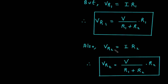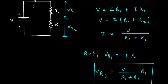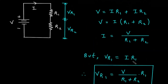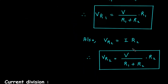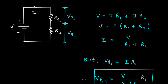Also we can find the value of Vr2. Vr2 is equal to I into R2, and I is again V divided by R1 plus R2. So Vr1 is equal to V divided by R1 plus R2 into R1, and Vr2 is equal to V divided by R1 plus R2 into R2. Here we can see that for Vr1 we multiply by R1, and for Vr2 we multiply by R2 — that is, to find the voltage across a resistor, we multiply by that same resistor.